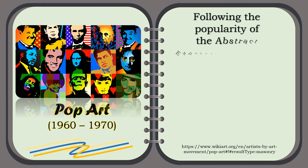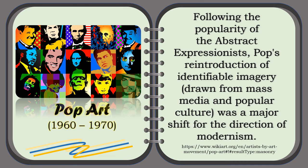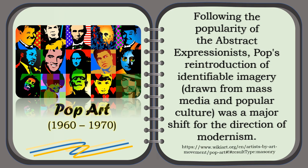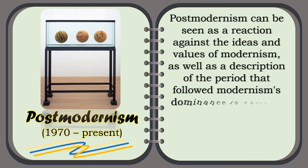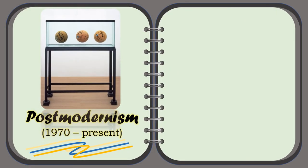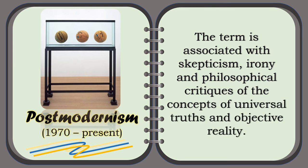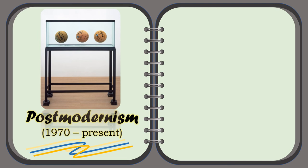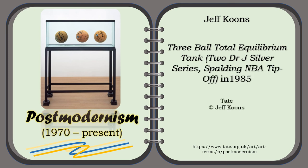Following the popularity of the Abstract Expressionists, Pop Art's reintroduction of identifiable imagery drawn from mass media and popular culture was a major shift for the direction of modernism. Postmodernism can be seen as a reaction against the ideas and values of modernism, as well as a description of the period that followed modernism's dominance in cultural theory and practice in the early and middle decades of the 20th century. The term is associated with skepticism, irony, and philosophical critiques of the concepts of universal truths and objective reality. For example, Jeff Koons — the three-ball total equilibrium tank, two Dr. J Silver series, Spalding NBA tip-off, in 1985.